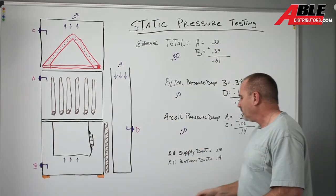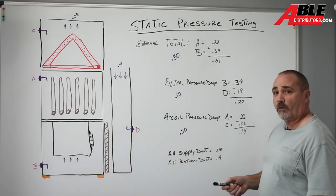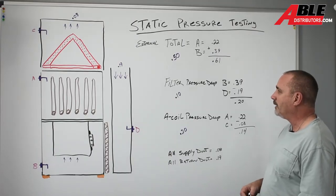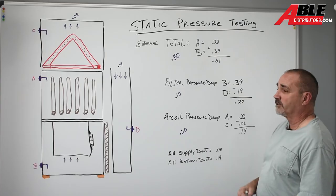So on this, all the supply duct work turned out to be 0.08 static. All the return duct, 0.19, I think that's a little high. And the total is 0.61, which again is high.